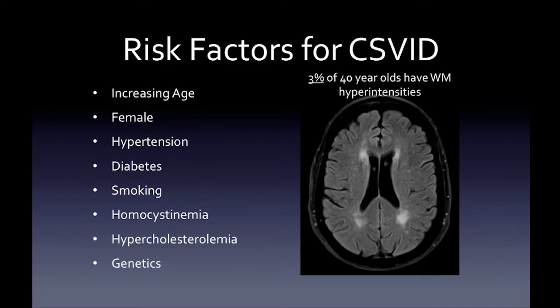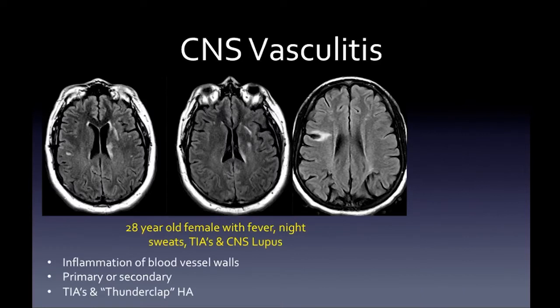Chronic small vessel ischemic changes in white matter are another common mimic. Risk factors include increasing age, hypertension, diabetes, smoking, and genetics. Just like migraine-related lesions, these are far more common than MS: 3% of 40-year-olds have white matter hyperintensities, while MS only affects 0.1% of the US population. On any given day, you're more likely to see chronic small vessel ischemic changes than MS white matter lesions.